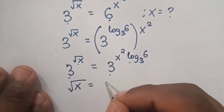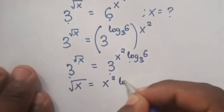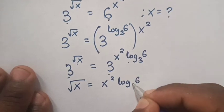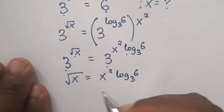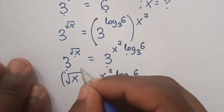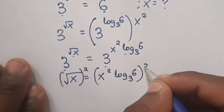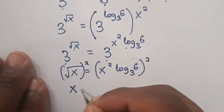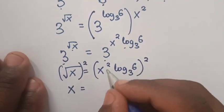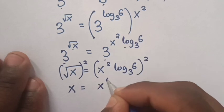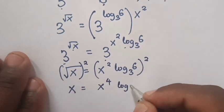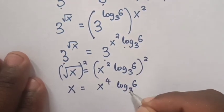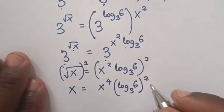Now here we compare the powers. So square root of x is equal to x square log 6 base 3. Then we square both sides, so the square cancels with the square root: x is equal to x power 4 times log 6 base 3 bracket squared.